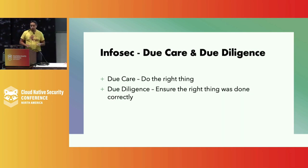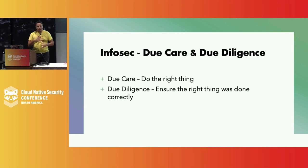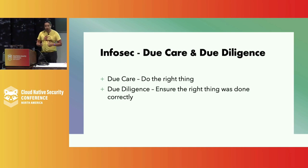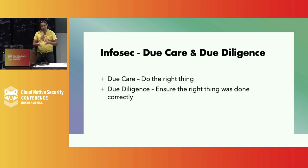All of this comes down to two things: due care and due diligence. Due care is doing the right thing. Due diligence is how you can show that you've done the right thing — what actions are you taking to ensure you're doing those things? A good heuristic is: what would a reasonable, trained expert do? If those actions are reasonable, you're probably following due care. This is very important in large organizations because if you're not following due care, there may be major implications for the person who is supposed to have that responsibility.